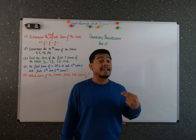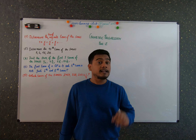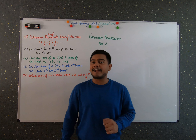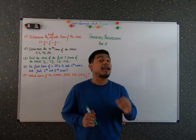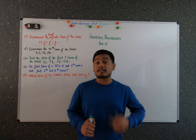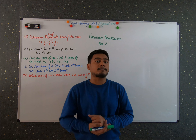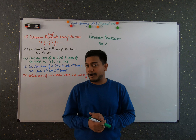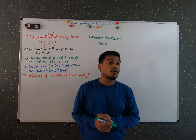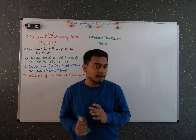When the common ratio r is less than one, the formula is S_n = a(1 − r^n) / (1 − r). When r is greater than one, S_n = a(r^n − 1) / (r − 1). I also discussed the formula for the sum of infinite terms of a GP when r is less than one: S_∞ = a / (1 − r).